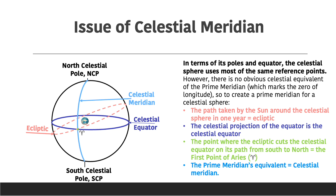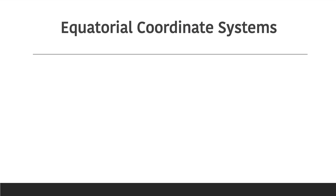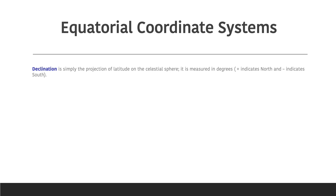So let's talk about the equatorial coordinate system. It has two main coordinates. Declination is the projection of latitude onto the celestial sphere — it's similar to latitude but with one main difference. It is measured in degrees, where a plus sign indicates north and a minus sign indicates south. So instead of using cardinal points like north and south as in latitude, we use symbols to represent the north and south celestial poles.